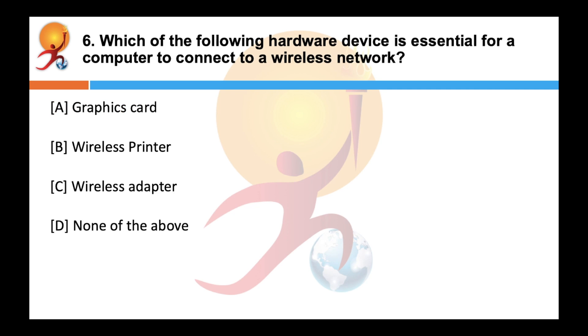Which of the following hardware device is essential for computer to connect to a wireless network? Correct answer is C. Wireless adapters are those hardware devices which are installed inside computers to enable wireless connectivity. If a computer does not have a wireless adapter, it will not be able to connect to a router in order to access the internet.